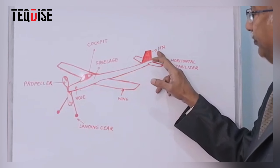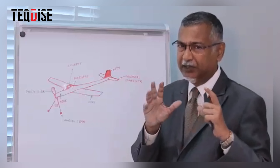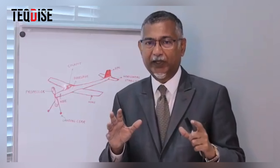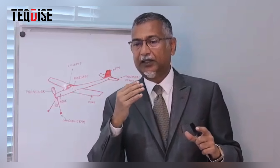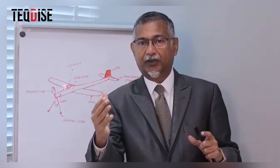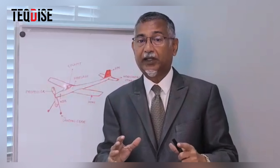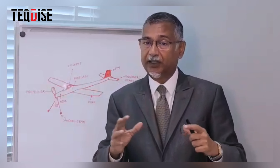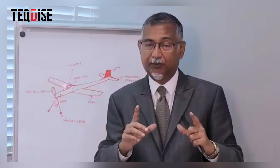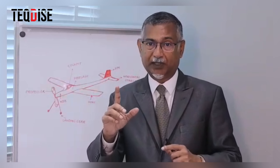So once again, the eight parts are: the propeller, the nose, the landing gear, the wing, the fuselage, the fin, and the horizontal stabilizer. With this information, you can now go directly to your building board and start making the Chipmunk or the Cadet — whichever model airplane you're building as your first model. Thank you.